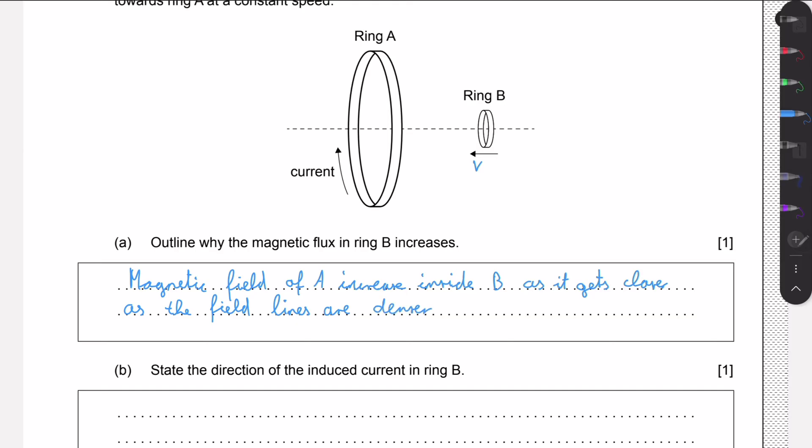So simply we will have more field lines going through ring B, so it would probably look something like this. And then obviously around it could spiral out, but the closer we get, the more lines we will have going through the area of B.